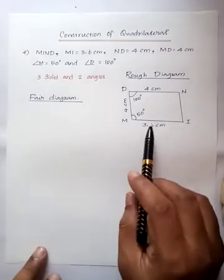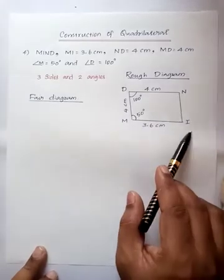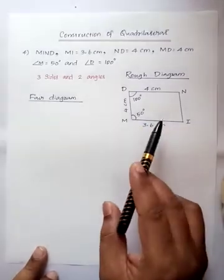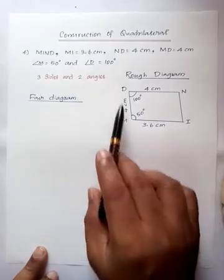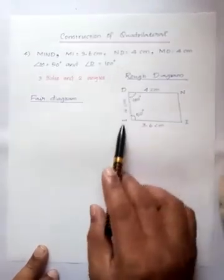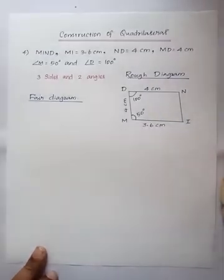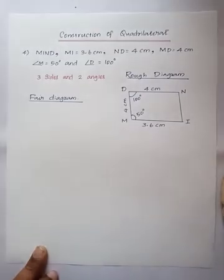First we have to draw the rough diagram like this - MIND with points M, I, N, D. Mark the given measurements: MI, MD, MN, angle D and angle M is equal to 50 degrees. We have marked the measurements.